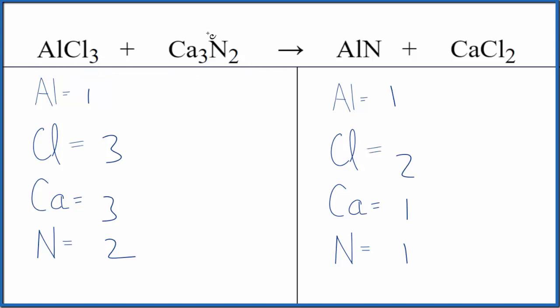Let's look at the type of reaction first. It's like the aluminum and calcium are changing places. We have aluminum chloride but end up with aluminum nitride, and we have calcium nitride but end up with calcium chloride. The type of reaction? Double displacement.